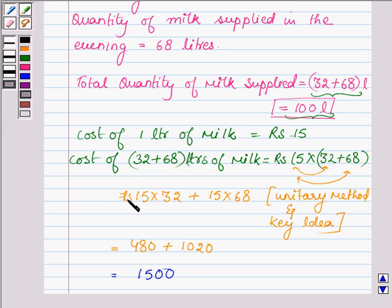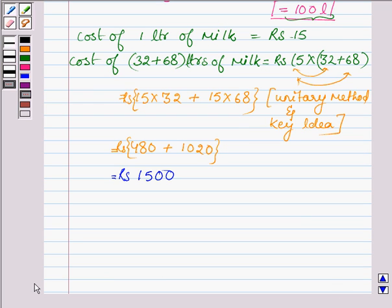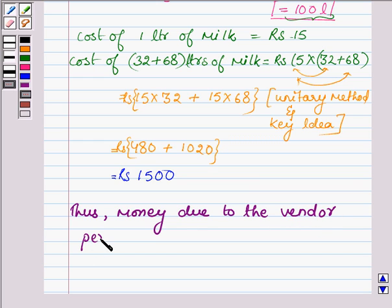So, this is Rs 1500 and hence the cost of 100 litres of milk is Rs 1500. Thus, we can say that money due to the vendor per day is equal to Rs 1500.